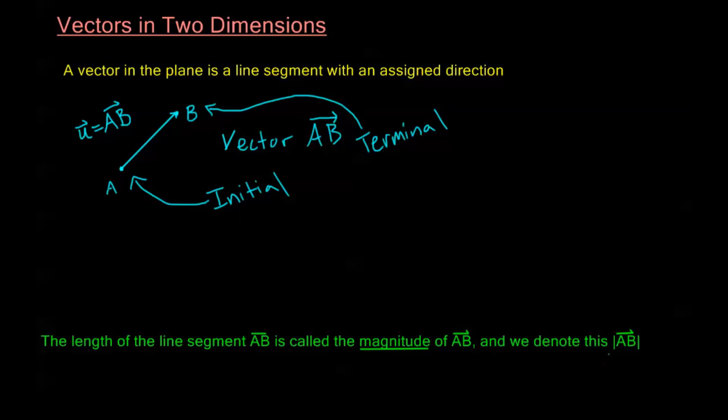But we denote this the same way that we would absolute value or modulus, by these bars on either side. So, what this means here at the end is, this is the total length of the vector from point A to point B.